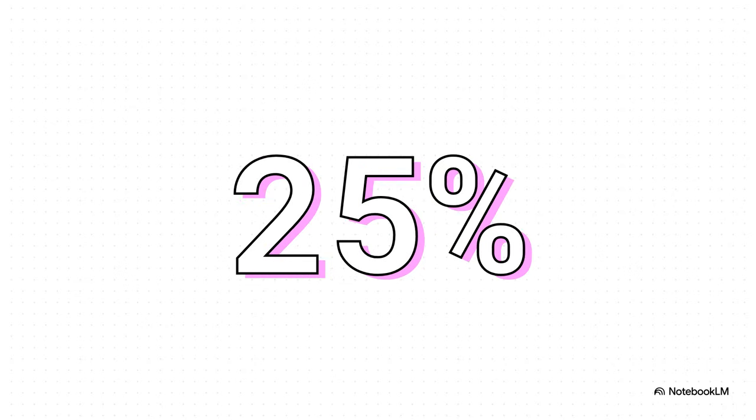Now for the rules of the game. The central bank says there's a 25% required reserve ratio. What does that mean? For every $100 a bank takes in from depositors, it has to keep 25 of it in the vault. It can't lend it out — it's the legal minimum.